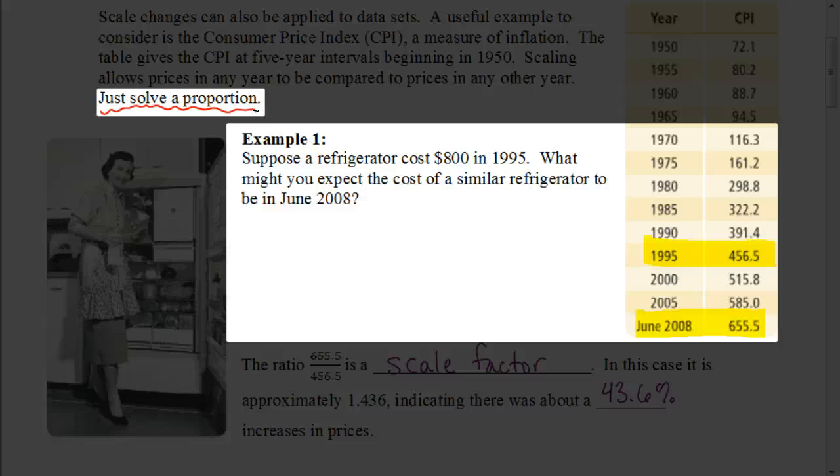Recall that a proportion, basically, is two ratios set equal to each other. In other words, we're going to have two fractions being equal to each other. It's important that we recognize where we're getting these numbers and what these fractions are representing. We'll have a ratio comparing our costs. We'll have another ratio comparing our Consumer Price Index, our CPI.